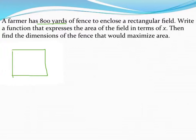This problem's kind of dumb, because it turns out that no matter what, a square is always going to be your maximum area, so knowing that, I can just take my 800 yards, divide it by 4, make a square. But let's pretend we didn't know that and kind of see the math behind this.